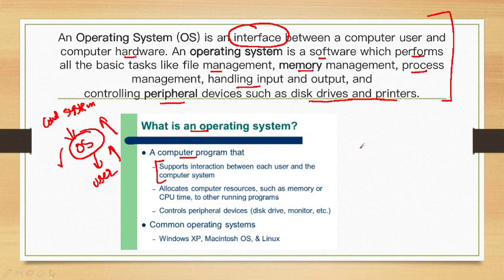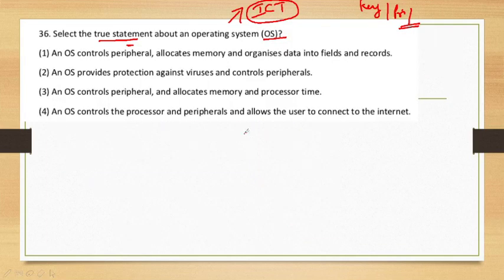Now, questions framed about the operating system can also ask which systems are or are not operating systems — for example, Magnetos, OS, Linux, and Windows XP are some common operating system names. Looking at our question: the operating system manages memory management, process management, time management, and controls peripheral devices. So this is the correct statement about the operating system.